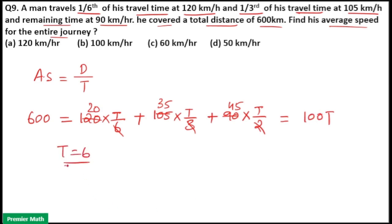That means T is equal to 6. So average speed is equal to total distance 600 by total time 6 hours. So that is equal to 100 km per hour. So option B is your answer.